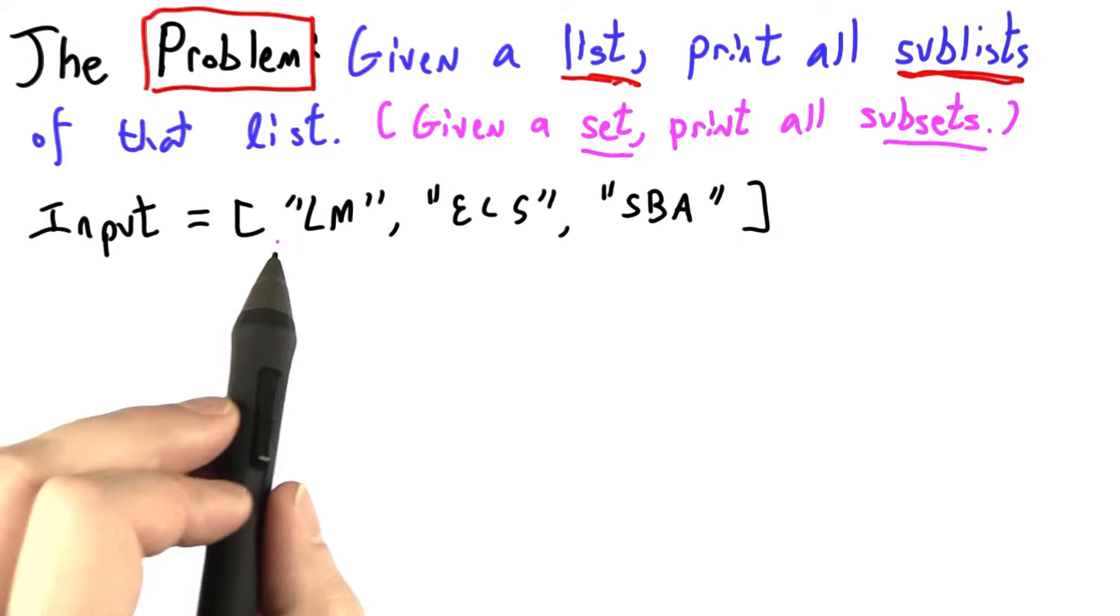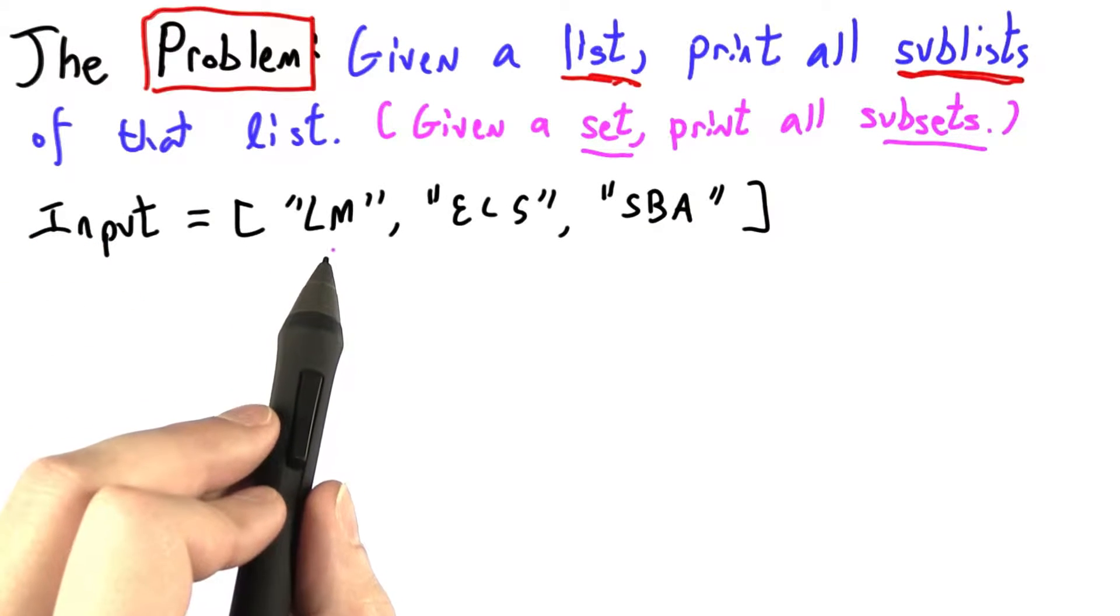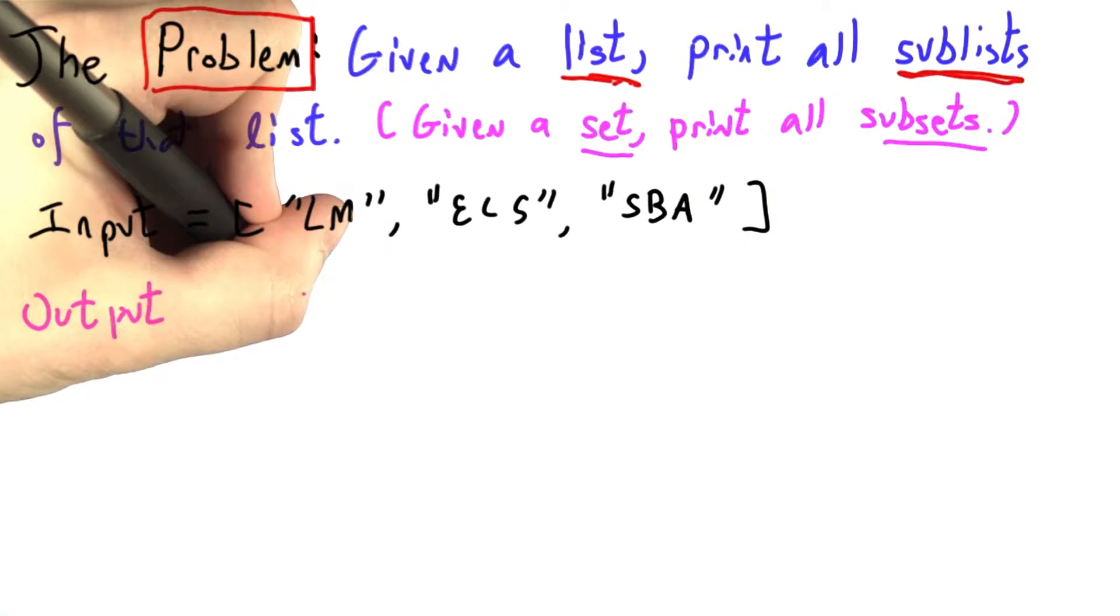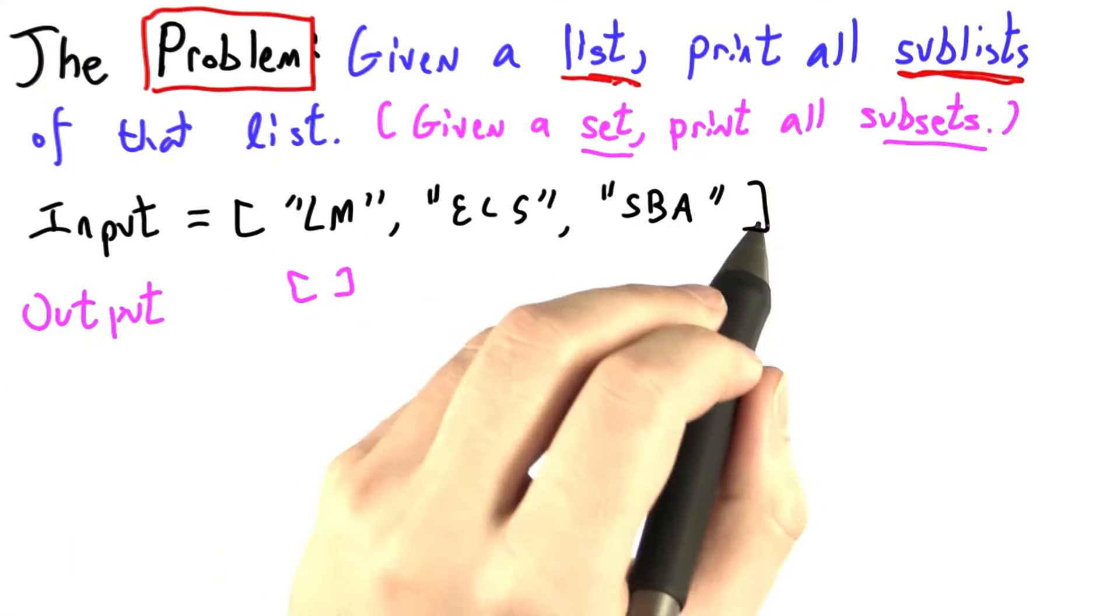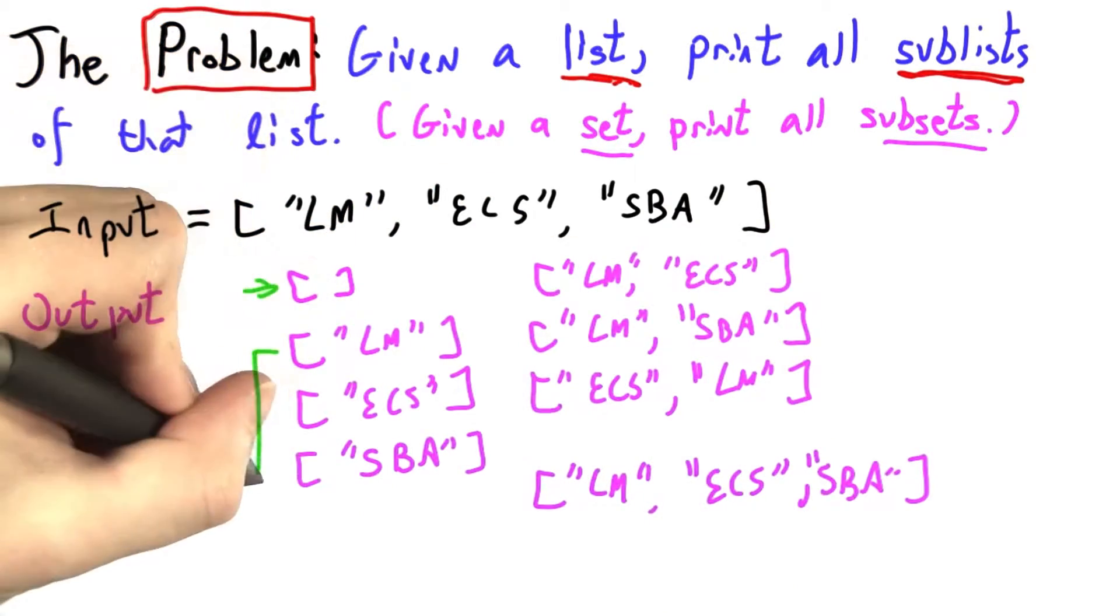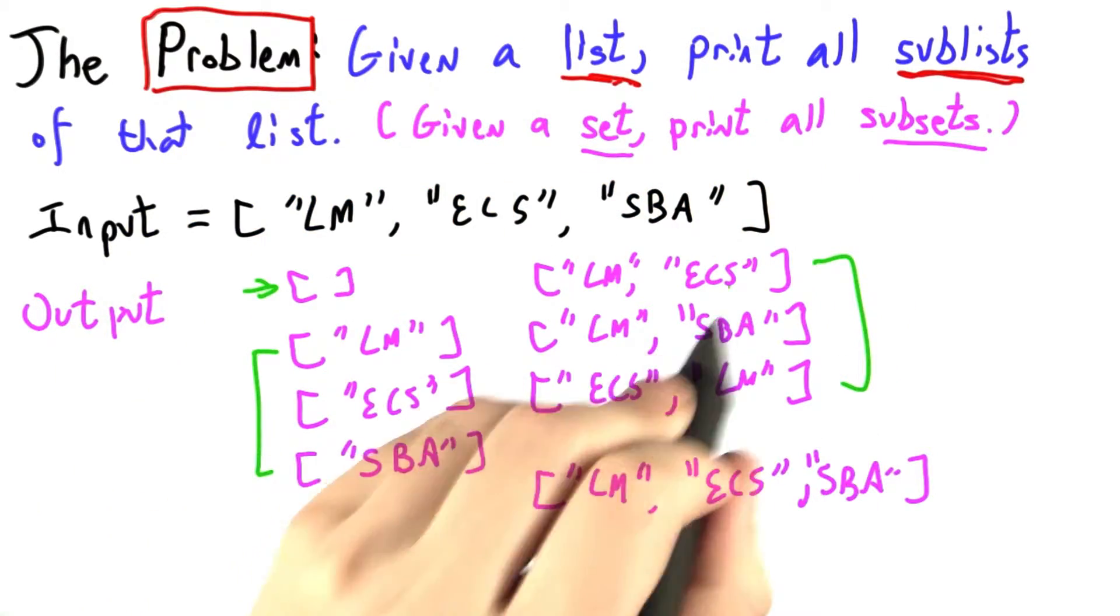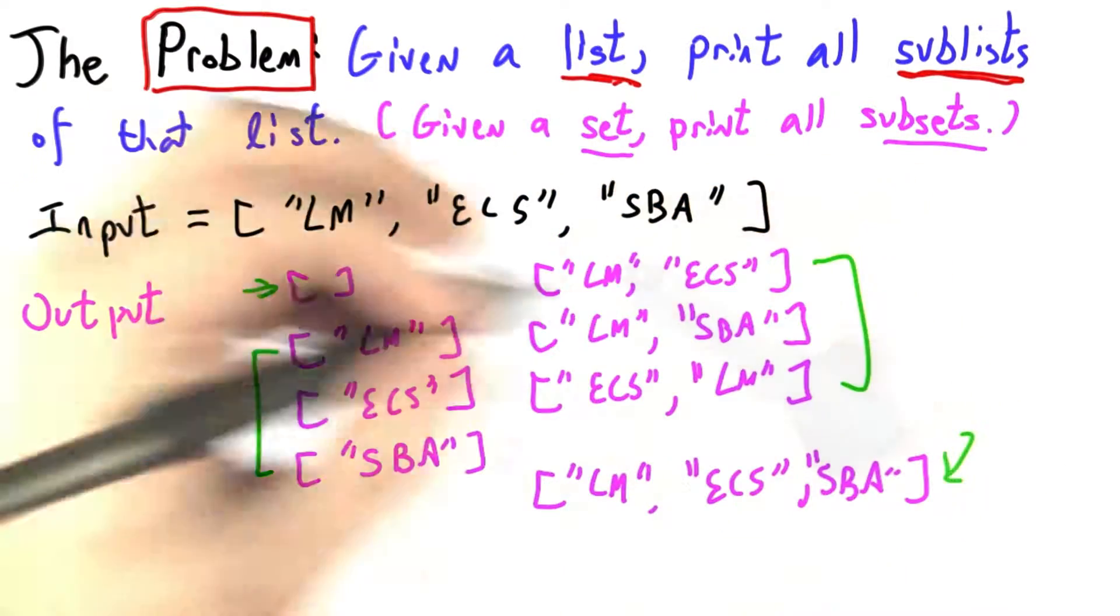For example, suppose the input is the three element list containing the strings LM, ECS, and SBA. Then we want the output to include the empty list, all of the lists containing just one of them, all of the lists containing any pair of them, and then all of them.